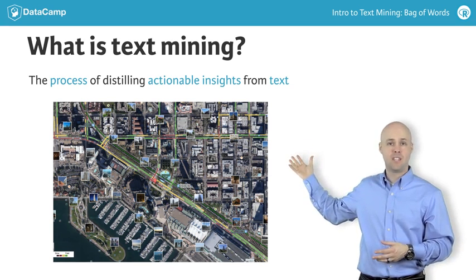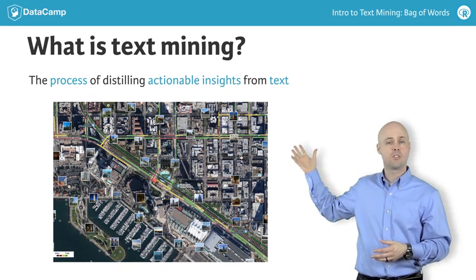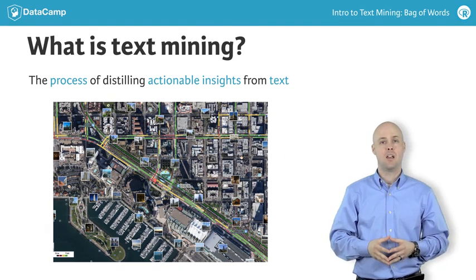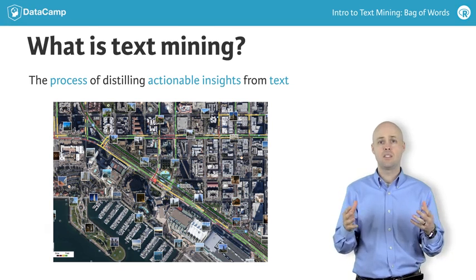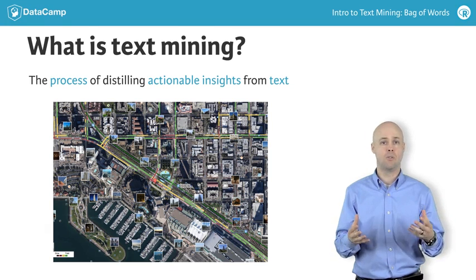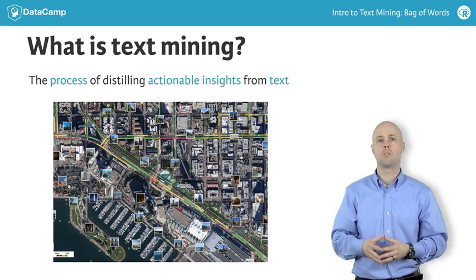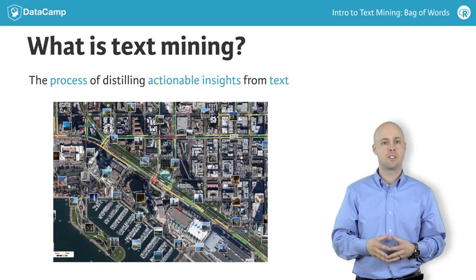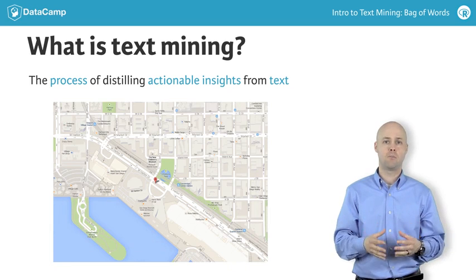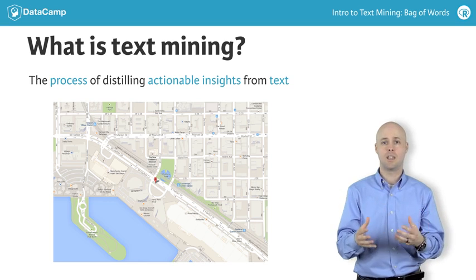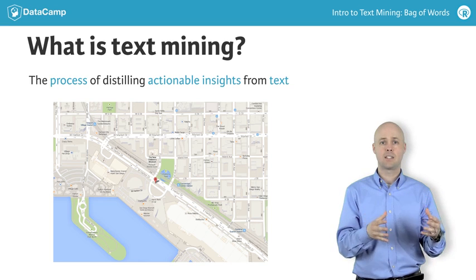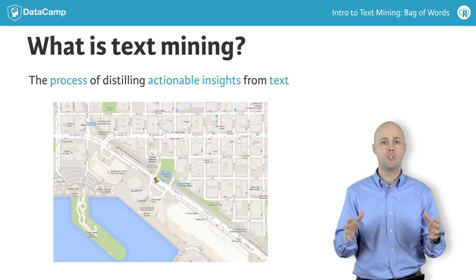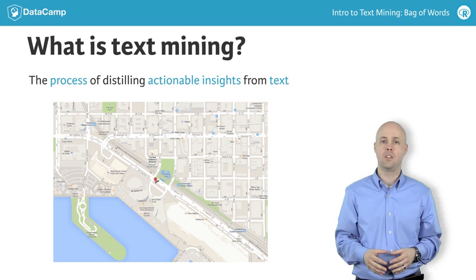Here we have a satellite image of San Diego overlaid with social media pictures and traffic information for the roads. It is simply too much information to help you navigate around town. This is like a bunch of text you couldn't possibly read and organize quickly, like a million tweets or the entire works of Shakespeare — you're just drinking from a fire hose. You can text mine a bunch of tweets or all of Shakespeare to reduce the information just like this map, helping you navigate and draw out the important features.